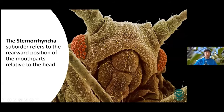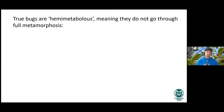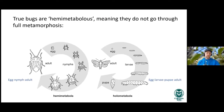Scales are in the Sternorrhyncha group, a suborder in which the mouthparts face rearward relative to the head. Here's a close-up of an aphid where you can see the siphon actually faces in the opposite direction of the head, whereas in most other insects the mouthparts face forward. True bugs are hemimetabolous, meaning they don't go through full metamorphosis. They progress from egg through several nymphal stages before reaching the adult stage — egg to nymph to adult — whereas holometabolous insects go through egg, larval instars, pupa, then adult.